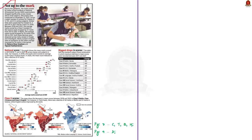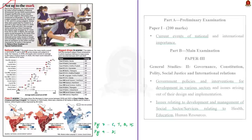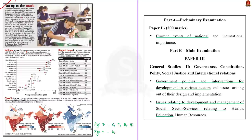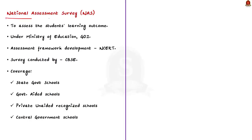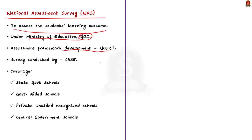The next data point discusses findings from the National Achievement Survey (NAS). According to the survey, due to the pandemic, marks scored by Indian school students have declined significantly across classes and most subjects. The National Achievement Survey assesses students' learning outcomes and comes under the Ministry of Education. The framework determining learning outcomes is developed by NCERT, but the survey is conducted by CBSE.